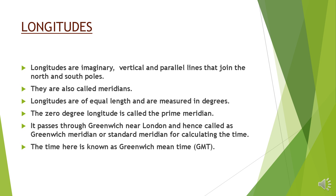Now let us start with the longitudes. What are longitudes? Longitudes are imaginary, vertical and parallel lines that join the north and south poles. They are also called meridians. Longitudes are of equal length and are measured in degrees. The zero degree longitude is called the prime meridian. It passes through Greenwich near London and is hence called the Greenwich meridian or standard meridian for calculating the time.